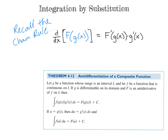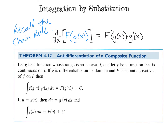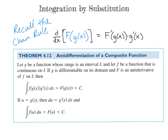Integration by substitution is a way that we can actually integrate this. When we're taking the antiderivative of a composite function, the integral of f of g of x times g prime of x dx equals that original composite function F of g of x, plus c, because we have an indefinite integral without upper and lower limits of integration.